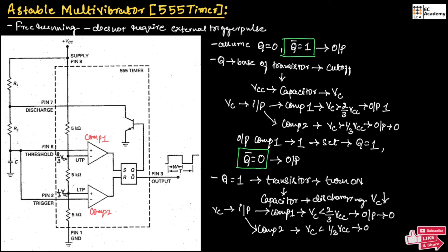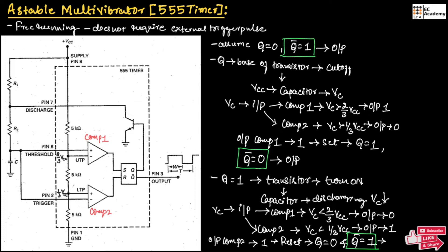Across comparator 2, the input voltage will be VC less than 1/3 VCC, so the output of comparator 2 will be equal to 1. Since the output of comparator 2 is 1, this will reset the SR flip-flop and Q will be equal to 0 and Q bar will be equal to 1. So this 1 will appear across the output. As you can observe, the output was 1, then moved to 0, and again the output will toggle to 1, and this process will continue.